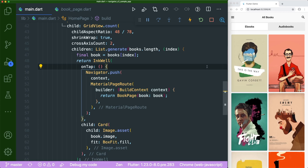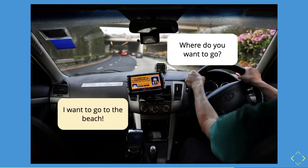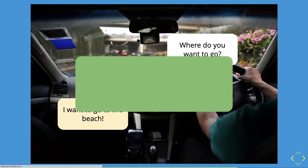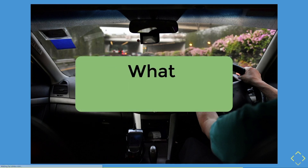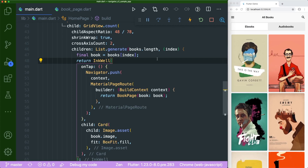Now let's explain the opposite of imperative programming: declarative. Using the same taxi example — the taxi driver asks where you want to go, and as a normal person you reply: I want to go to the beach. This is declarative programming — the 'what' of programming. You declare the destination you want to arrive at. The new Navigator uses this approach, and it actually looks like a widget, which is a very declarative way. We're going to refactor our project into the new Navigator.